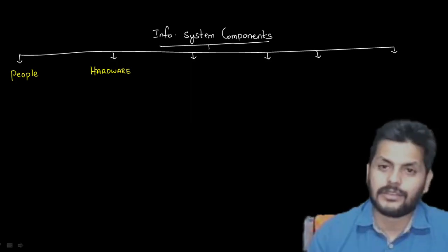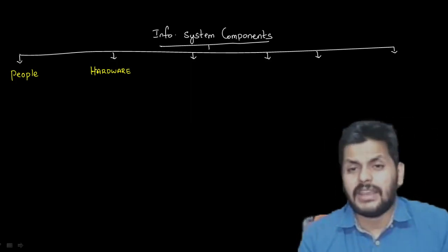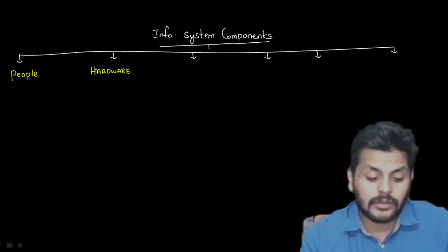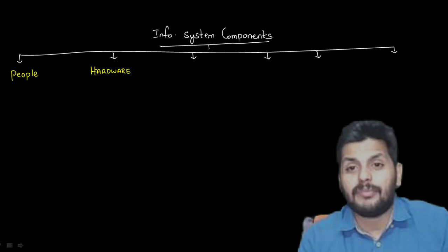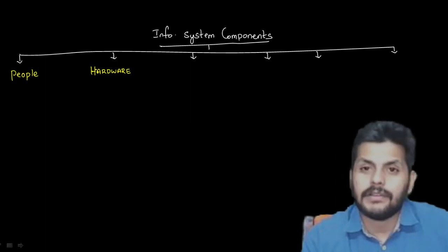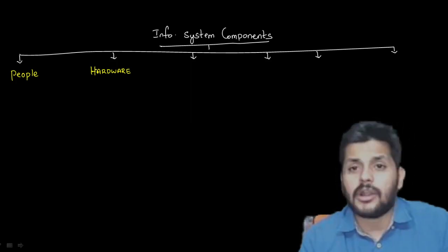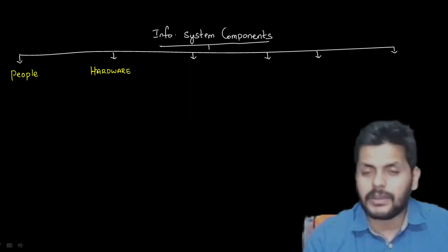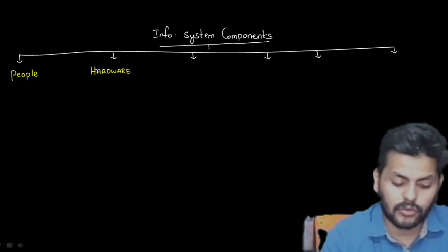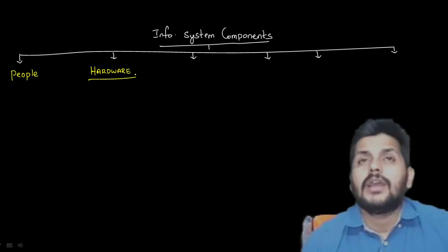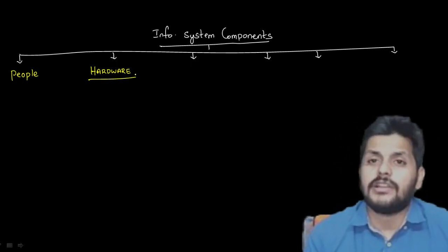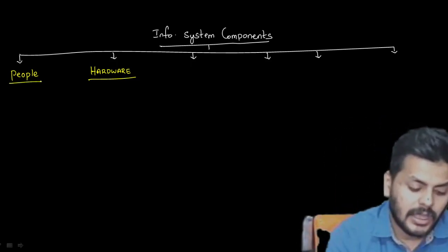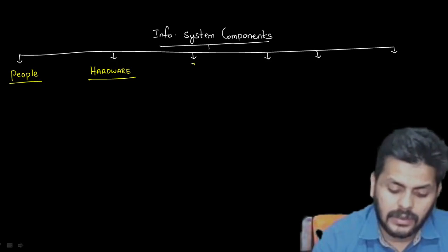Input devices include keyboard, mouse, stylus, mic, barcode readers, and webcams. Then we have speakers, monitors, projectors, and printers as output devices. That's elementary — input and output hardware — but the discussion becomes more interesting when we talk about processing and storage devices.